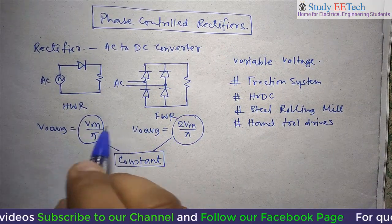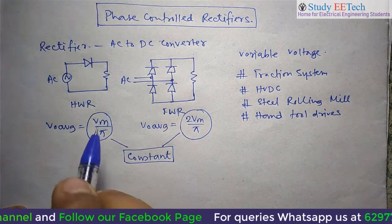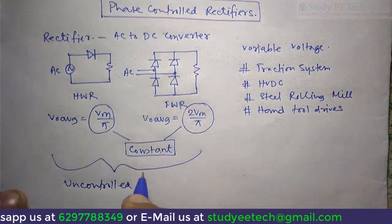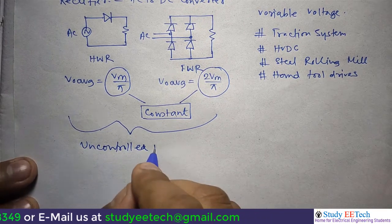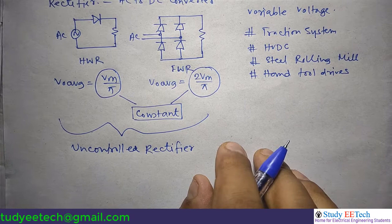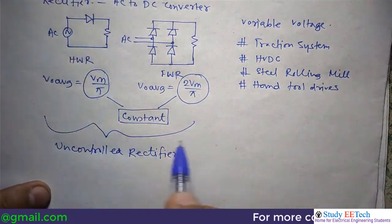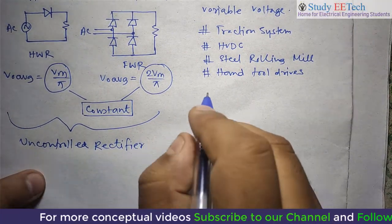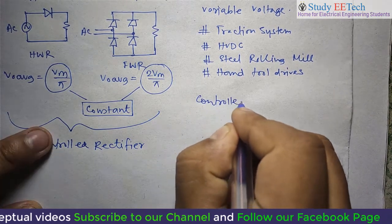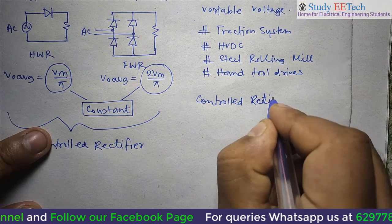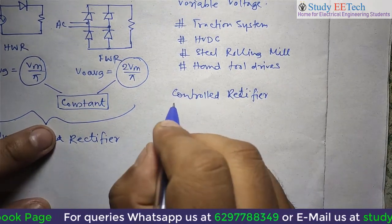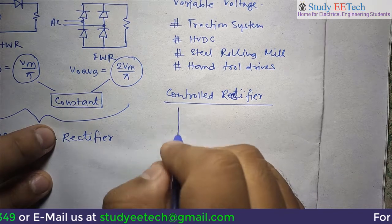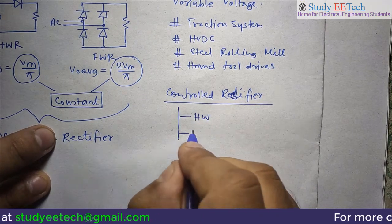But we cannot get that variable DC voltage from the traditional AC to DC converter, and we call them Uncontrolled Rectifiers. This is the problem with the traditional system. So if one category is uncontrolled rectifier, there is another category called the controlled rectifier. The controlled rectifiers again are of two types: half wave and full wave.